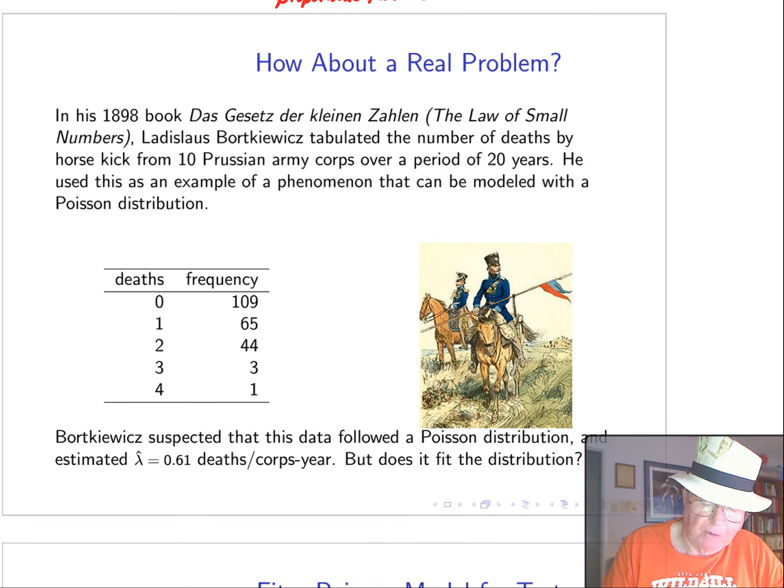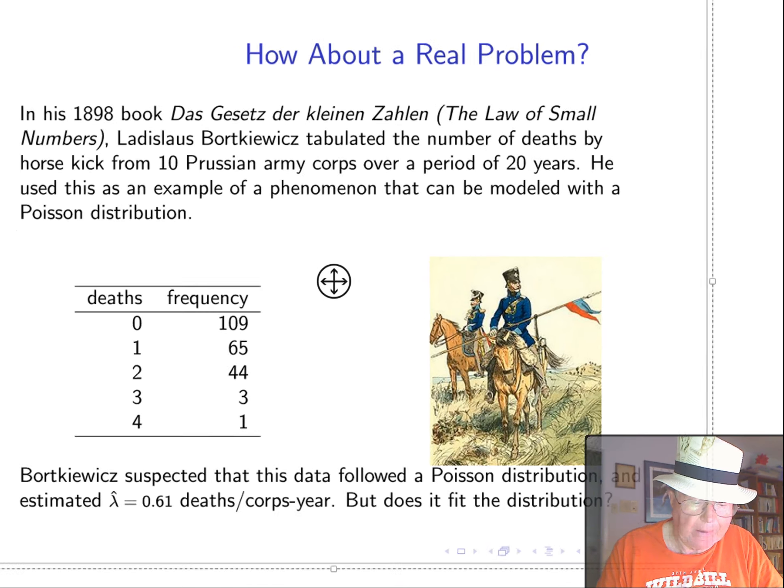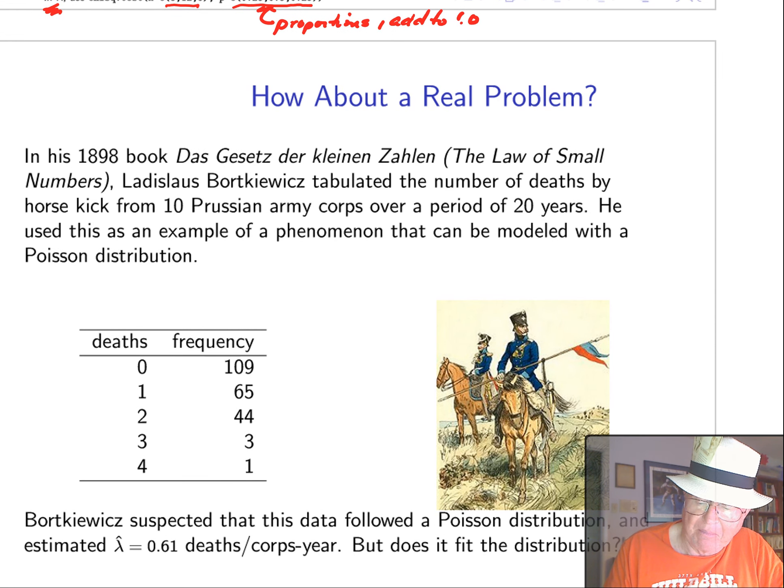Now, let's look at a little more realistic problem. One that has some legs to it. And this is a very famous problem. In 1898, a Polish mathematician, Bortkiewicz, tabulated the number of deaths by horse kick from 10 Prussian army corps over a period of 20 years. And now, I realize this was in a time when high-speed communication was a telegraph. He actually rode all over Prussia to accumulate this data. And so, I look at these frequencies. Most corps had no deaths, but there were ones, there were twos, there were threes, there were even going with four deaths in one year. And he thought this phenomenon could be modeled with a Poisson distribution.